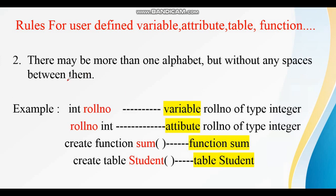The next rule is: there may be more than one alphabet, but without any spaces between them. We can take a group of alphabets, but when we use a group of alphabets, there must be no space between them. For example, 'rule_number' — you can see there is no space between the alphabets R, O, L, L, N, O. There is no space in 'rule_number'.